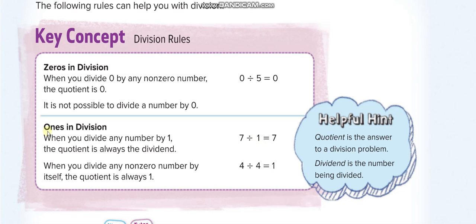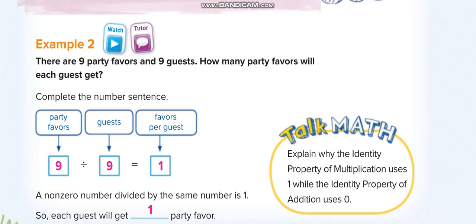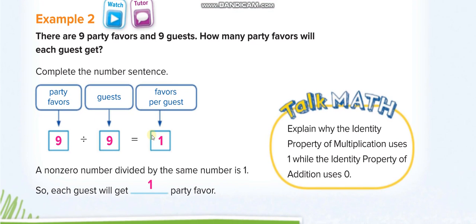For example, if you have 4 chocolates and divide them among 4 kids, each one gets 1. Similarly, 9 divided by 9 equals 1. Imagine 9 party favors shared among 9 guests — each guest gets exactly 1.